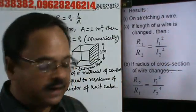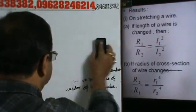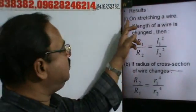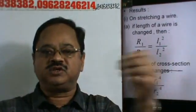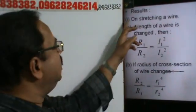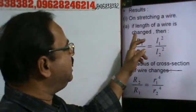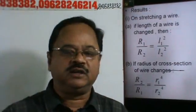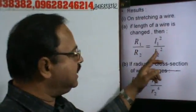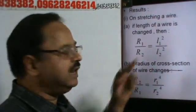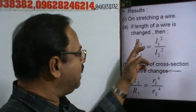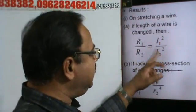Regarding the laws of resistance, there are certain important results. The first result is: on stretching a wire, if the length of a wire is changed — if the initial resistance is R1 with initial length L1, and it is stretched to length L2, then the new resistance R2 gives the relation: R1 by R2 is equal to L1 squared by L2 squared.